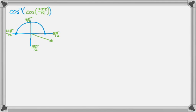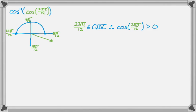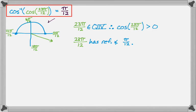Since 23π over 12 is in quadrant 4, cosine is positive there, so I'm looking for a first quadrant angle, since that's where cosine is positive in the range of inverse cosine. The reference angle of 23π over 12 is π over 12 — it's 1π/12 short of 24π/12. So the answer is just π over 12, because in the first quadrant the reference angle equals the angle.